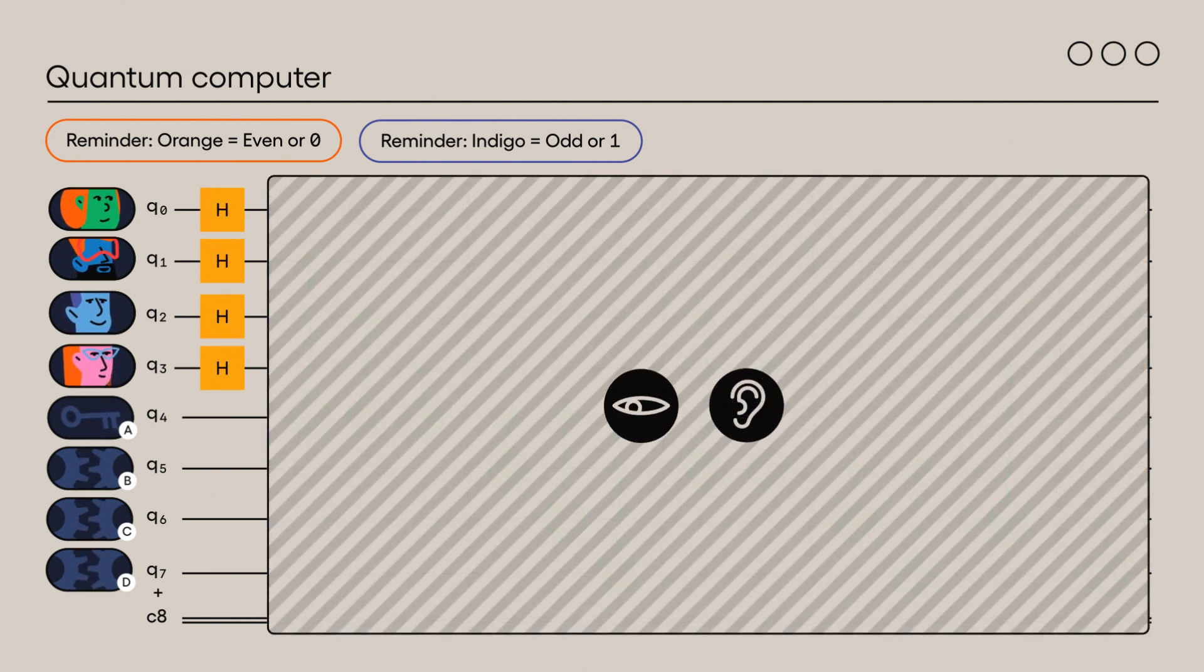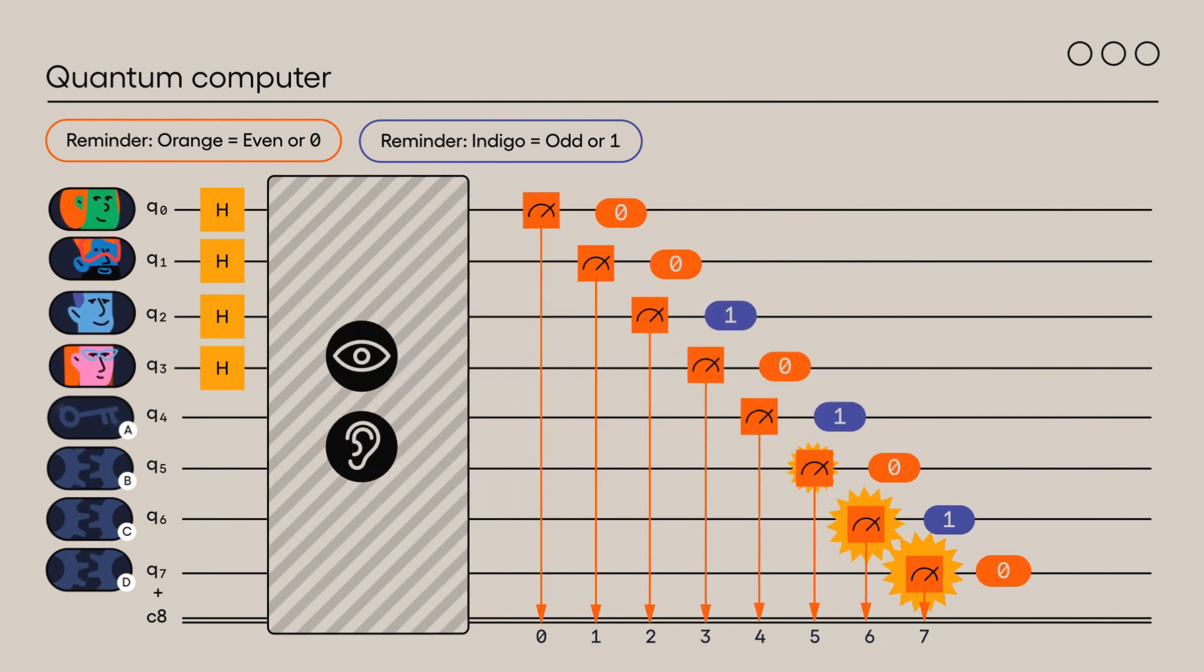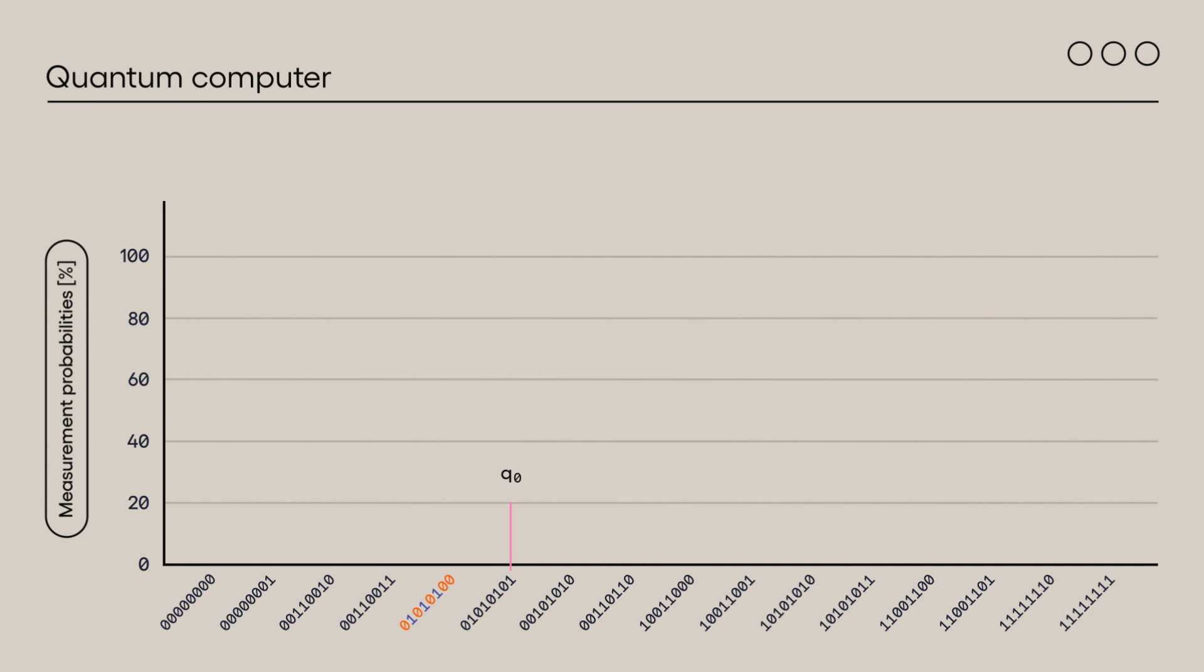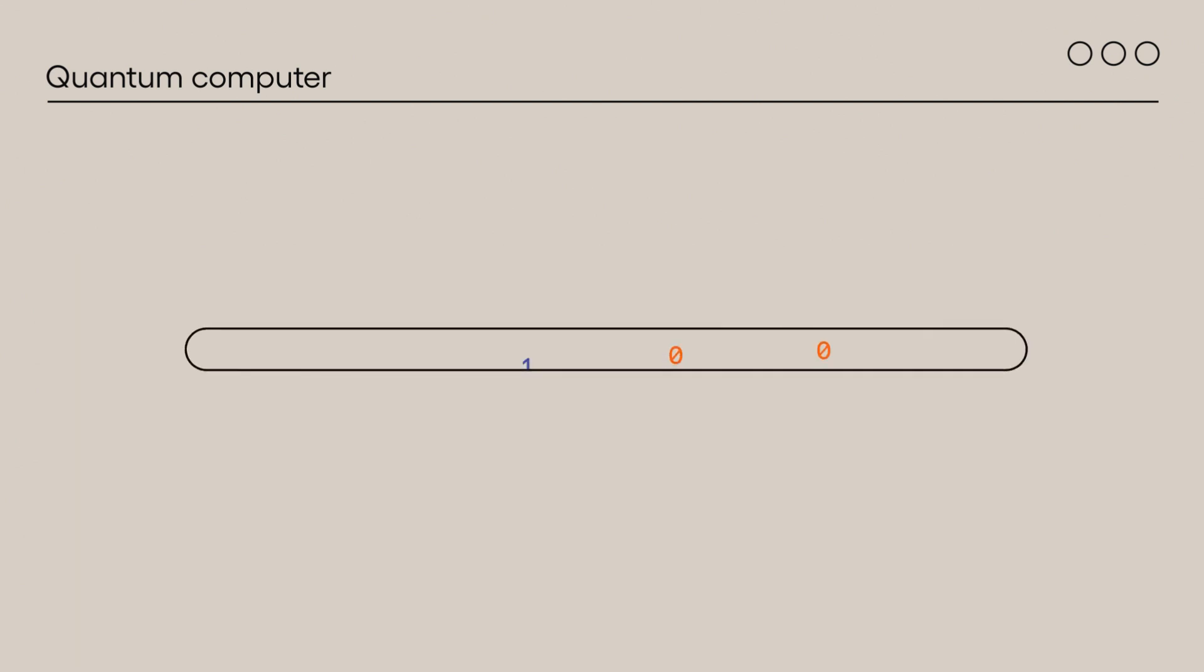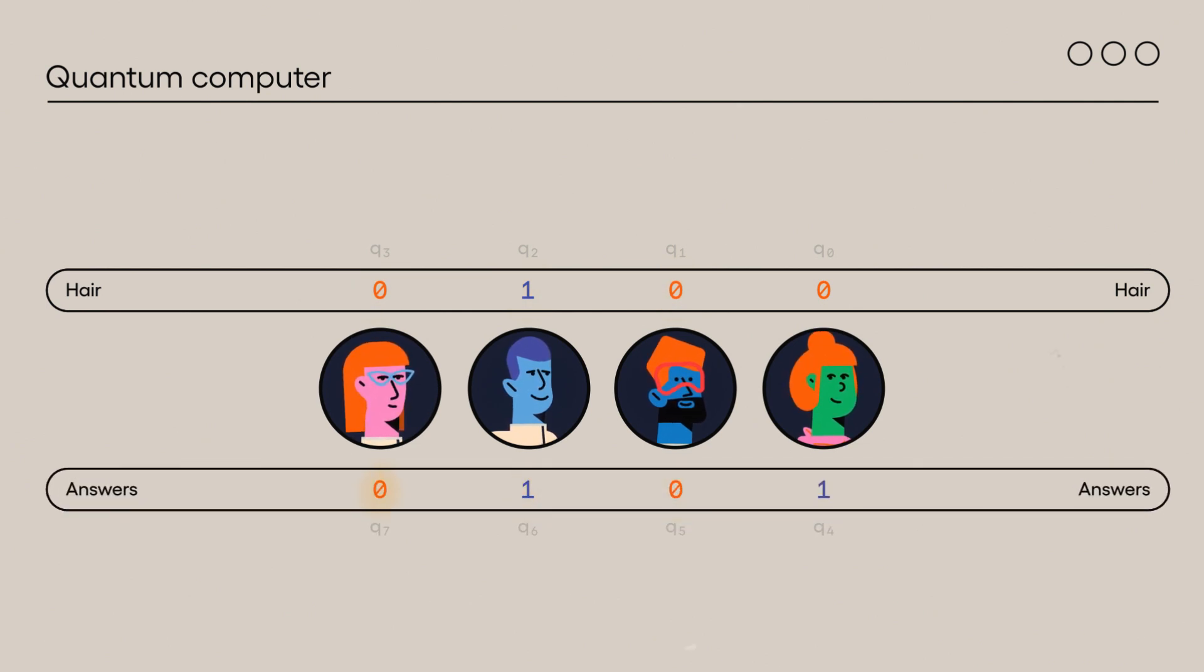It is now time to measure the system's qubits. Here's a little reminder. We read the value of qubits from right to left. If we run this algorithm several times on a quantum computer, we will get 16 different possibilities of colored hair distribution between people. We can see that the succession of results for qubits 1 to 3 is the same as qubits 5 to 7.